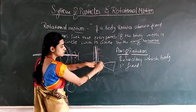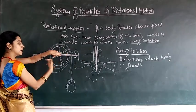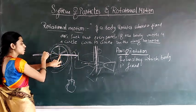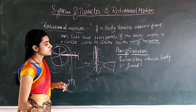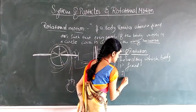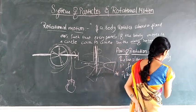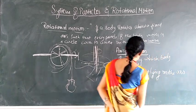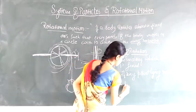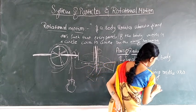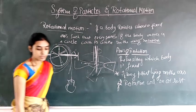The axis of rotation is the line along which the body is fixed. Any particle lying on the axis of rotation will be at rest.